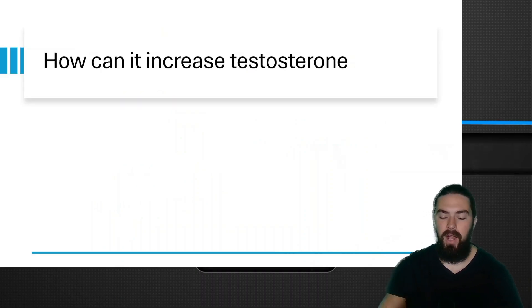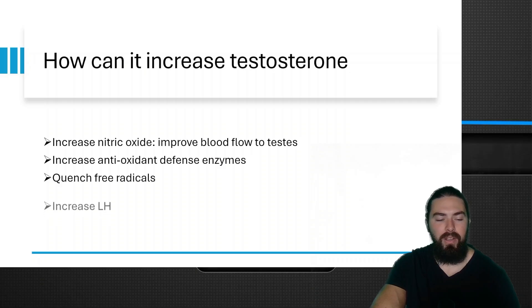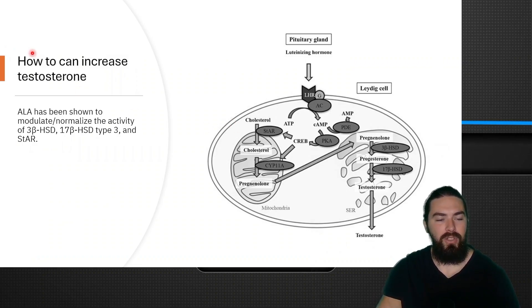Here are a few mechanisms of how it can increase your testosterone: it increases nitric oxide, which improves the blood flow to the testes—if you don't get enough blood flow and nutrients, you can't properly produce testosterone. It is an antioxidant and increases antioxidant defense enzymes, quenches free radicals, increases luteinizing hormone, and ensures optimal energy production in the testes. Alpha lipoic acid has been shown to modulate or normalize the activity of 3-beta-HSD, 17-beta-HSD type 3, and StAR. Type 3 is the one that converts androstenedione into testosterone, 3-beta-HSD converts pregnenolone into progesterone, and StAR is the enzyme that transports cholesterol into the mitochondria to be converted into pregnenolone—it's a rate-limited enzyme in steroidogenesis.